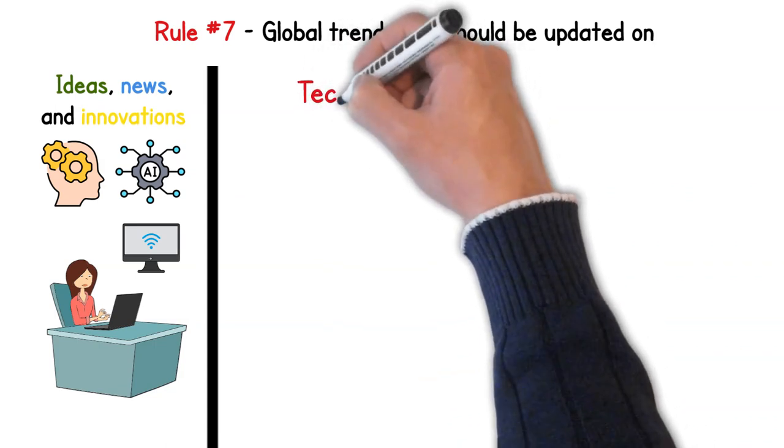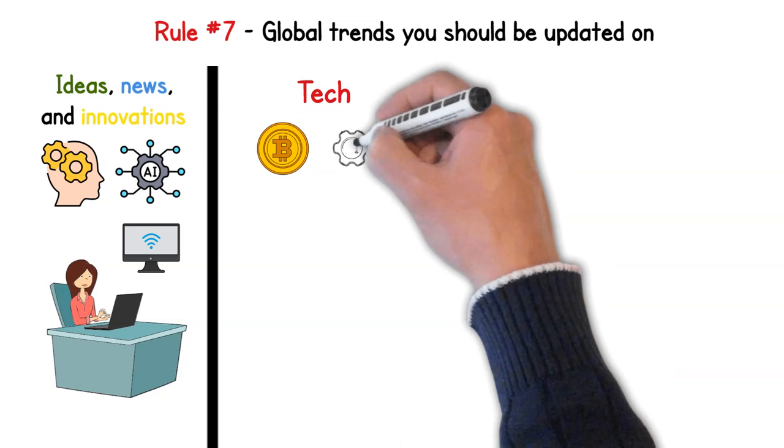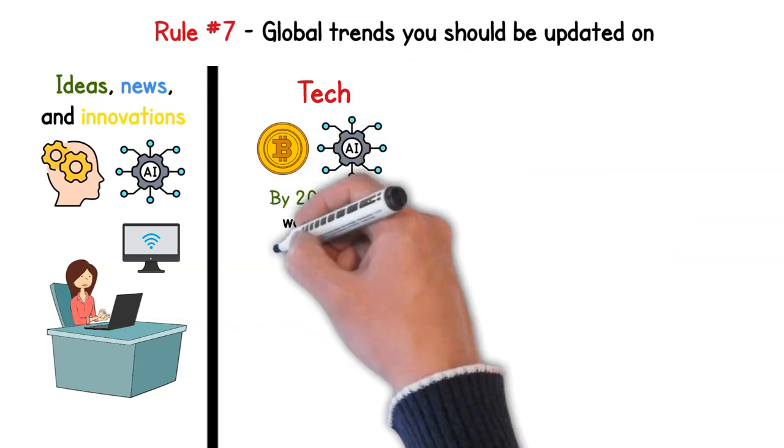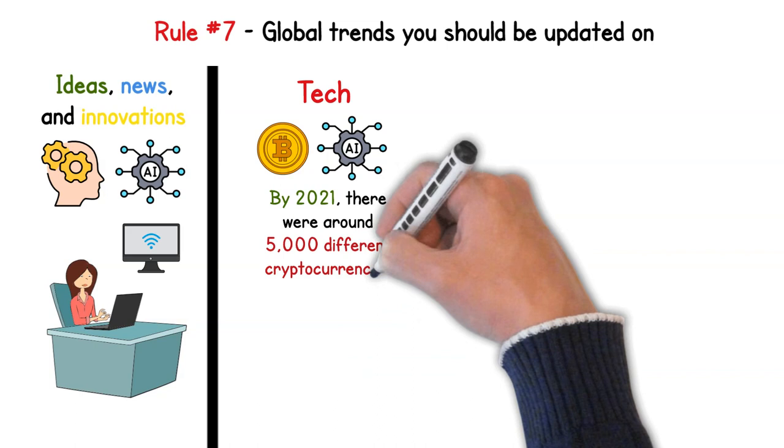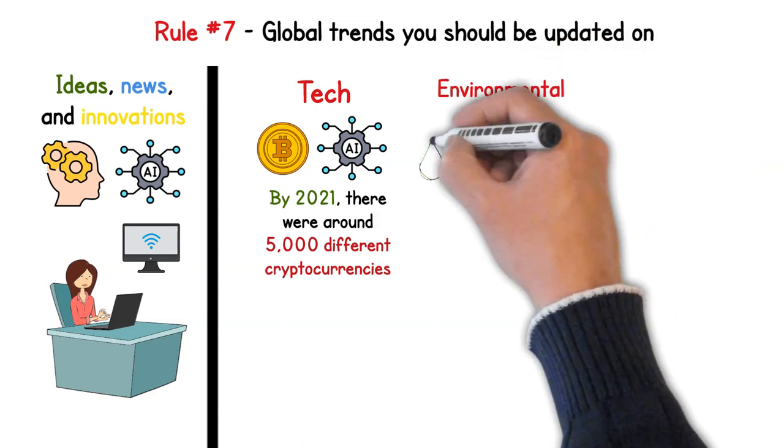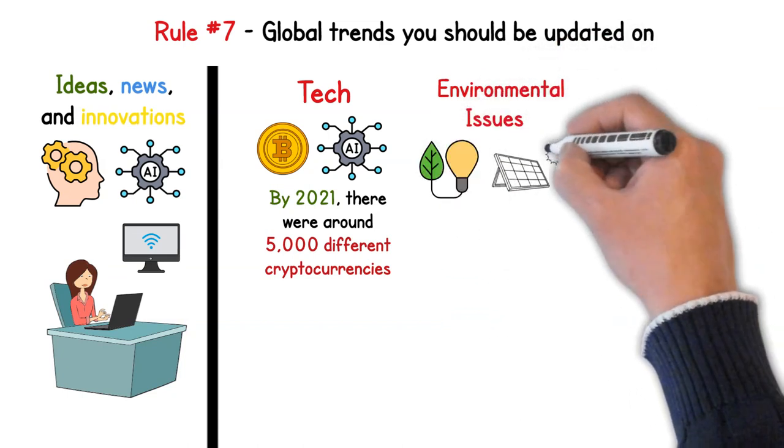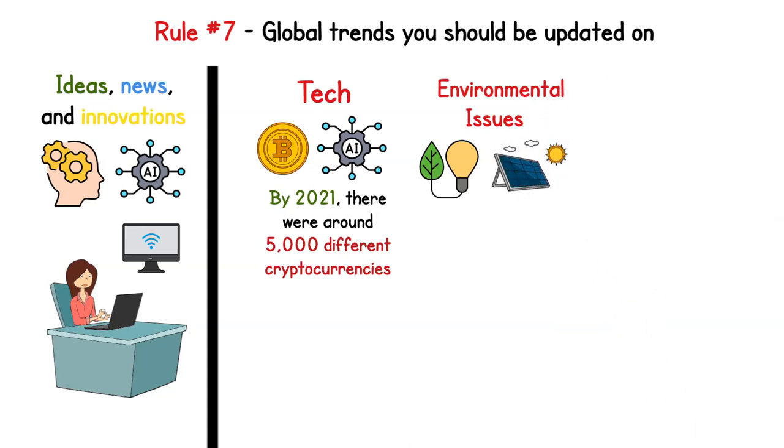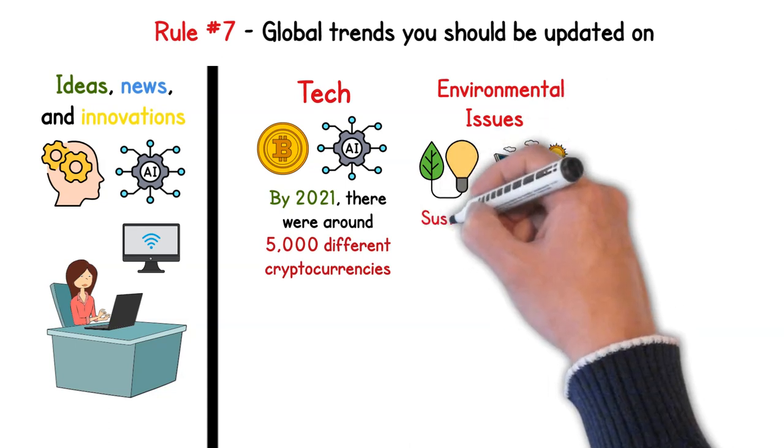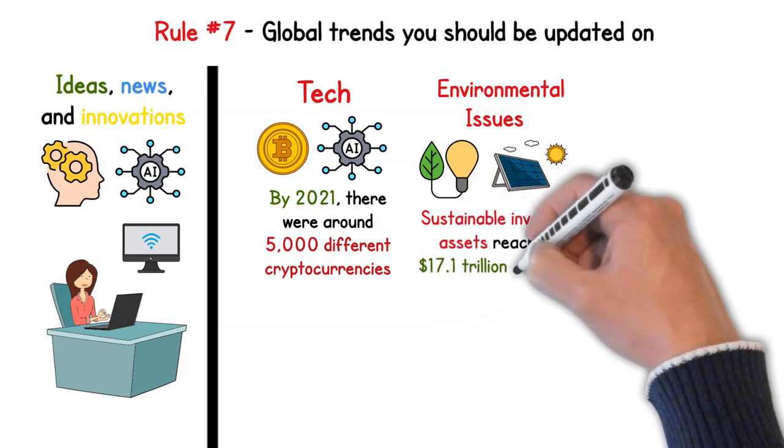Tech: cryptocurrencies, AI, AR, VR - technology is evolving at a crazy pace. By 2021, there were around 5,000 different cryptocurrencies in existence. The world of tomorrow will be shaped by tech advancements made today. Environmental issues: with global focus on sustainability, industries like renewable energy are booming. Even Wall Street's getting in on the green action with sustainable investing assets reaching $17.1 trillion in 2020.